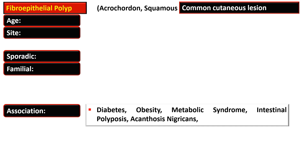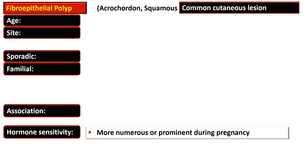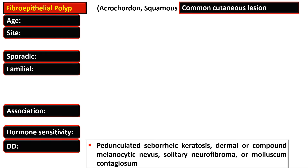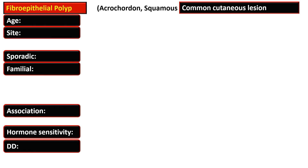They are associated with diabetes, obesity, metabolic syndrome, intestinal polyposis, and acanthosis nigricans. They become more prominent during pregnancy, so it is considered that they are hormone sensitive.